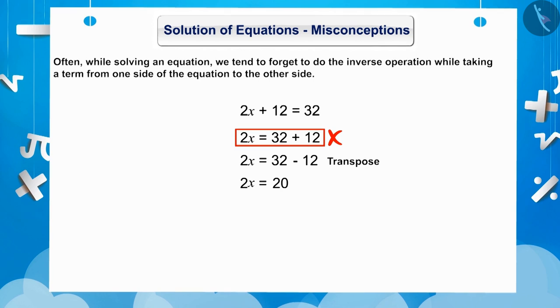Now, we need to find the value of x for which we want only x in LHS. As we can see, 2 is multiplied with x in LHS. While transposing, sometimes 2 is multiplied in RHS as well, which is incorrect.